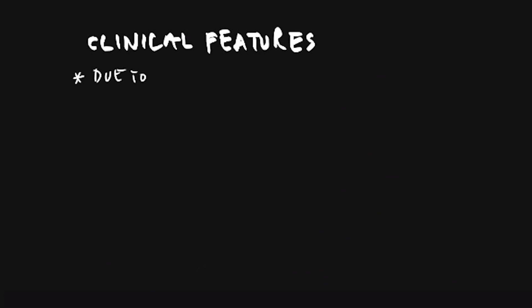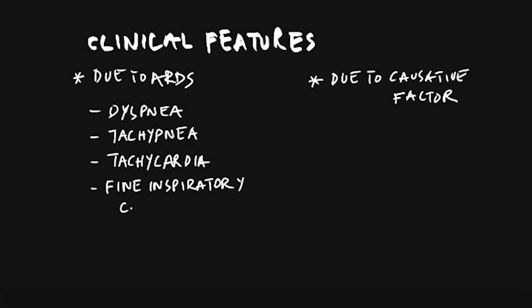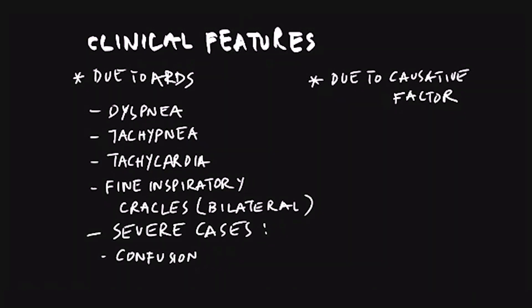Clinical features include features due to ARDS itself and features due to the causative factor. ARDS features include dyspnea, tachypnea, tachycardia, and bilateral fine inspiratory crackles. Confusion, respiratory distress, and cyanosis indicate a severe condition.